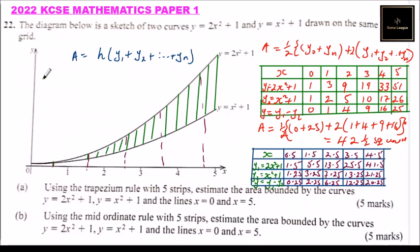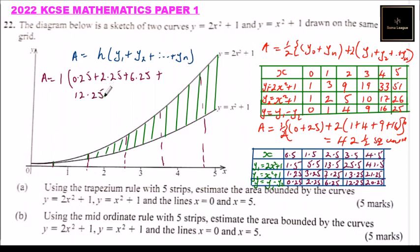The area equals h times the sum of the differences: 1 times (0.25 plus 2.25 plus 6.25 plus 12.25 plus 20.25). Adding these gives 41 and a quarter, so the area is 41.25 square units.